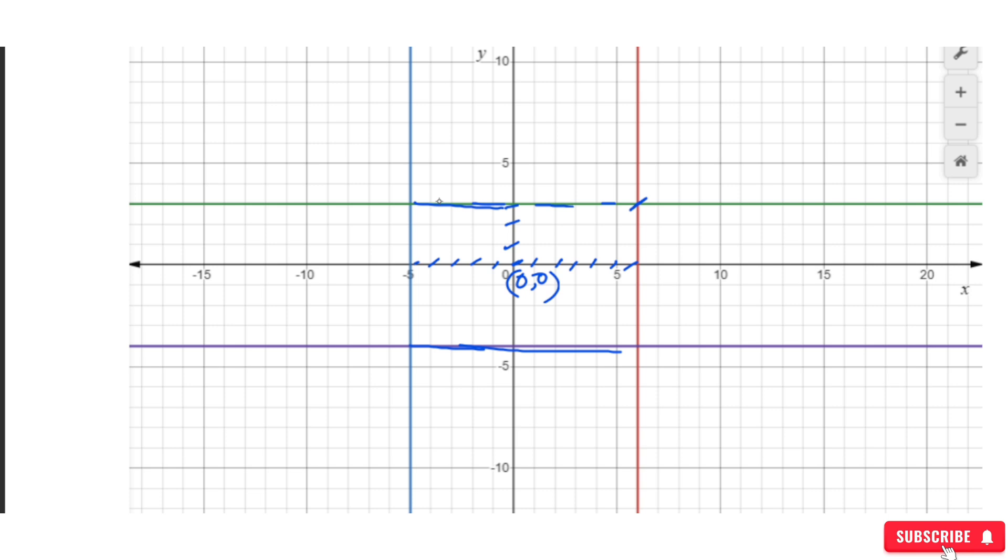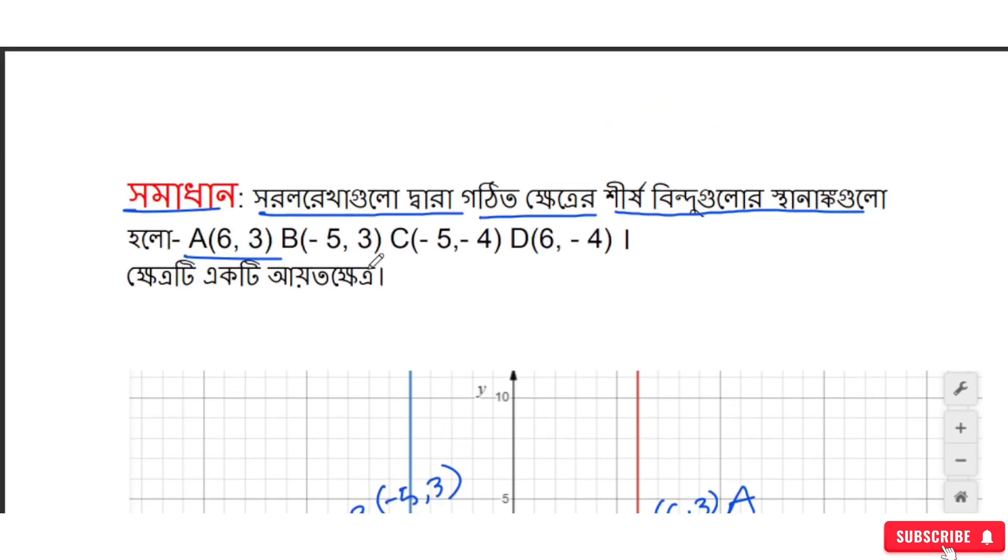Now we can identify the four corners where these lines intersect. The vertices are: 6 comma 3, minus 5 comma 3, minus 5 comma minus 4, and 6 comma minus 4.